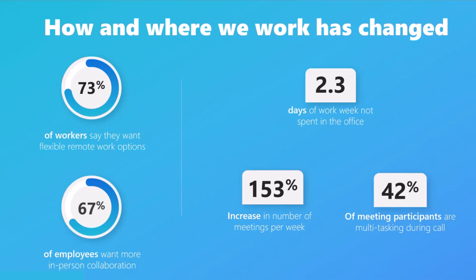This is what we have termed as a hybrid work paradox, where people want the best of both worlds. The data on the right further emphasizes how people are generally overloaded in the current hybrid setting. There are a lot more meetings even though people have stopped going to offices. People are also doing a lot more context switching, with 42% of attendees saying they are multitasking by sending emails and pinging people over chats while still on a call.